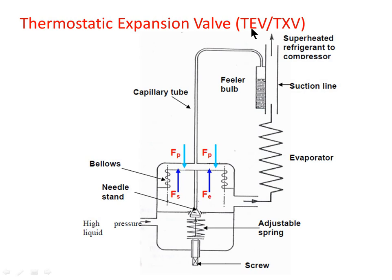Next is the thermostatic expansion valve (TEV or TXV). Despite its name, it is not a temperature control device and cannot be adjusted to vary evaporator temperature. It is actually a throttling device that automatically maintains proper liquid flow according to the load on the evaporator. Its operation is based on the principle of maintaining a constant degree of superheat at the evaporator exit. This ensures the evaporator is completely filled with refrigerant regardless of load, and no liquid spills over to the suction line. Because of its adaptability to load changes, it is mainly suitable for variable load systems.